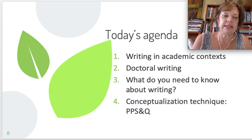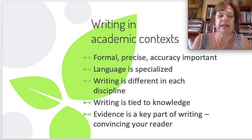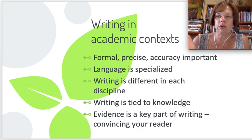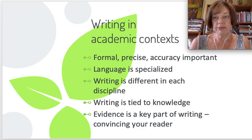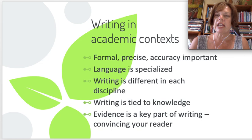Let's have a quick look at writing in academic contexts. These are a few characteristics which you may or may not know, but it's important to emphasize because it has a lot to do with how you present yourself, especially at the doctoral level. Writing in academic context is formal and precise, and accuracy is important. The language — generally across the board — is formal. It's not colloquial, not chatty, not conversational. It might be accessible and readable, but it's still formal. Precise in the sense that you use exactly the words you mean to use.